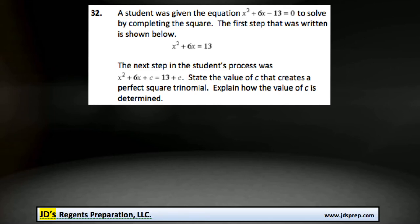Welcome to problem number 32 from the August 2014 Algebra Regents exam. A student was given the equation x squared plus 6x minus 13 equals 0 to solve by completing the square. The first step that was written is shown below.